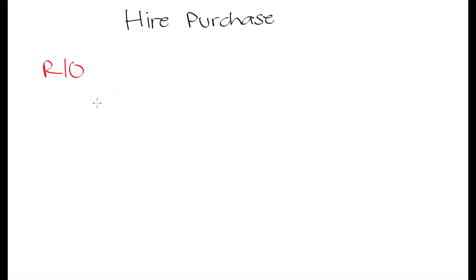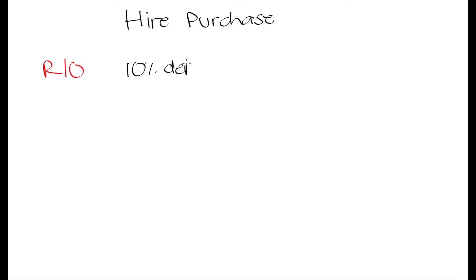What that means is that you have decided with the seller of the item that you will be able to purchase this item for a percentage of the cost upfront — that is how much you are going to pay right away. The balance is going to be paid over some period of time. In this case, the shop owner wanted a 10% deposit, which is how much you have to pay right now on the spot to get this item.